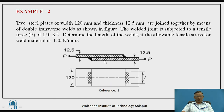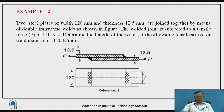This is another example where two plates are joined by transverse fillet welds as shown. Transverse fillet welds are perpendicular to the load, so these two welds are transverse. The plate width is 120 mm and thickness is 12.5 mm, joined by a double transverse fillet weld. The welded joint is subjected to a tensile force of 150 kN. Determine the length of the weld if the allowable tensile stress for the weld material is 120 N/mm².